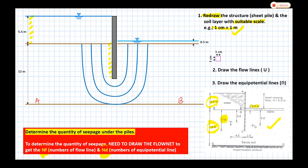Now proceed with the equipotential lines. I prefer to start at the bottom of the sheet pile in order to control the shapes, because we need to produce curvilinear squares. Remember: we need to produce curvilinear squares — we cannot have rectangles.